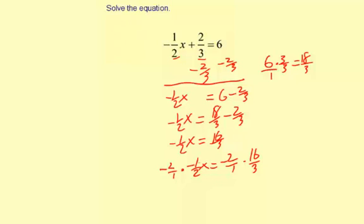So negative 2 over 1 times negative 1 half equals 1 because negative 2 over 1 times negative 1 over 2 equals positive 2, and 1 times 2 is 2. So 2 over 2 reduces to 1.